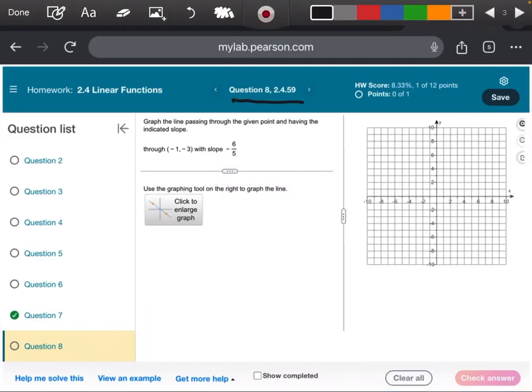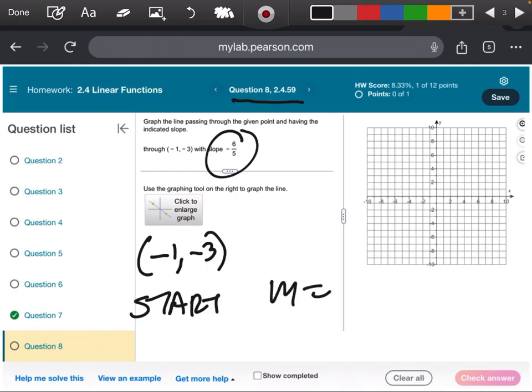Alright, so this is another question out of the homework. This is number 8 from section 2.4. The first thing they're telling me is that the point we have is negative one and negative three. The slope is negative six fifths.